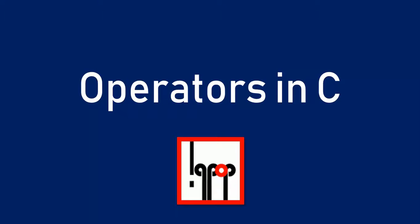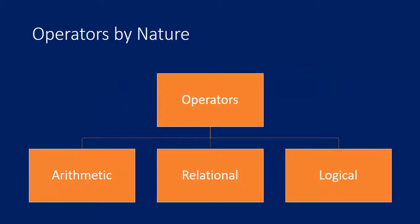Hello there, welcome to IQpop. Today I will discuss about operators in C. By nature there are three kinds of operators: arithmetic operators, relational operators, and logical operators.